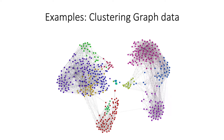We can also cluster graph data. In social networks, every person could be a node in the graph and every connection could indicate that we are friends in the network. If we run a clustering method, we can find a group of friends that share common interests using different information like profile data or the activities we usually do in the social network.